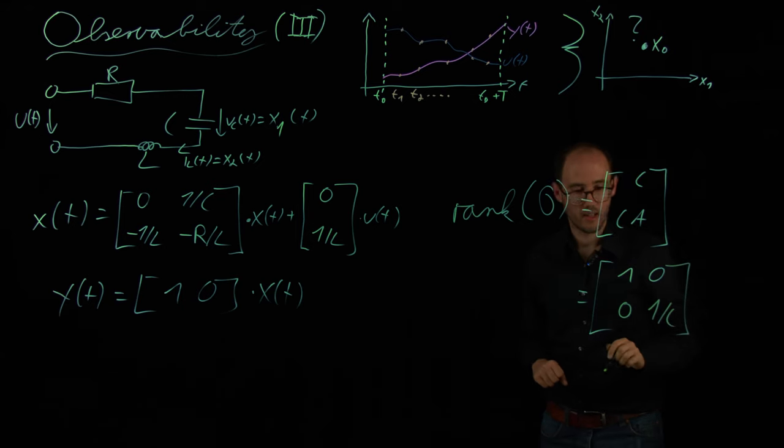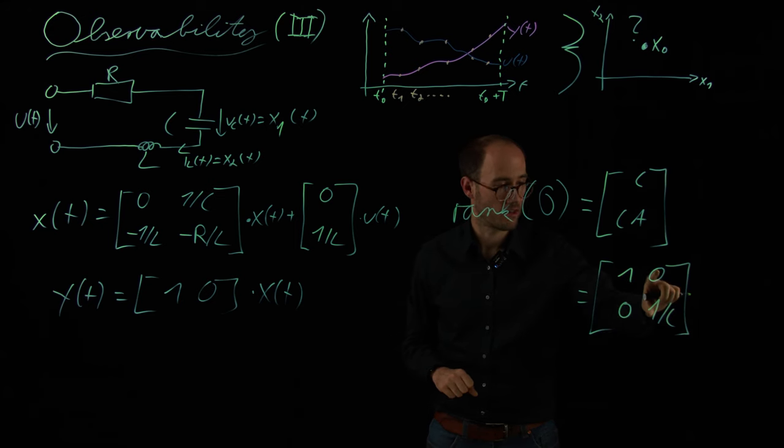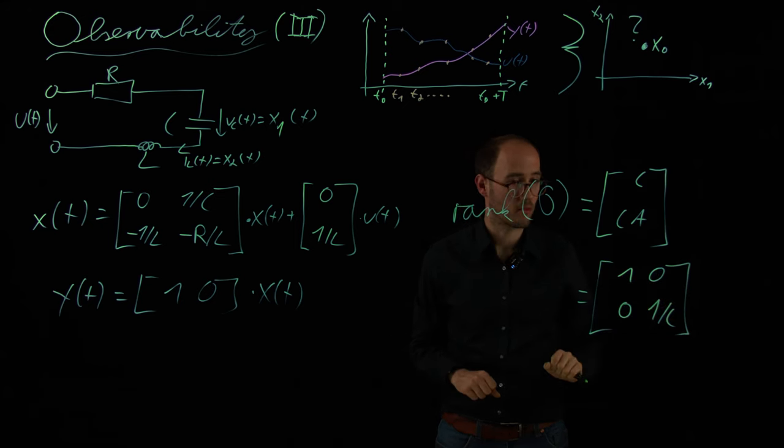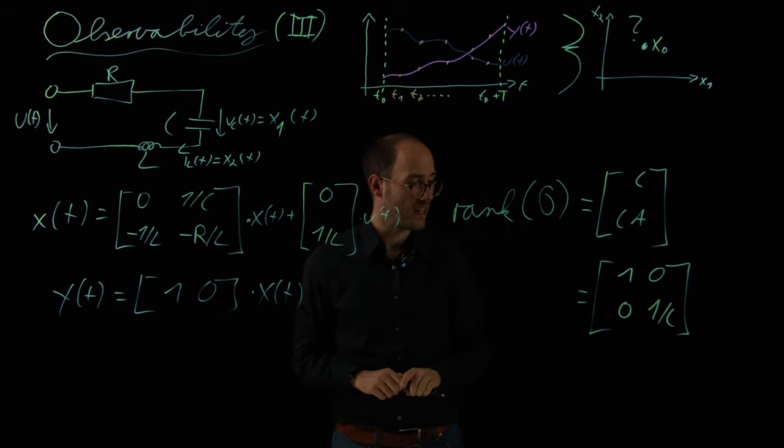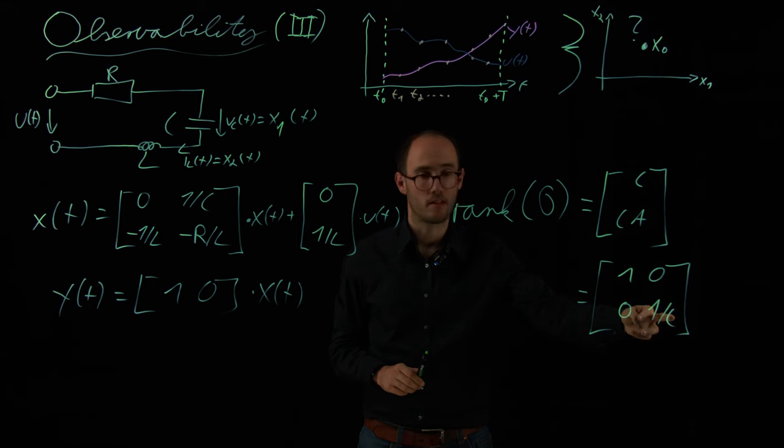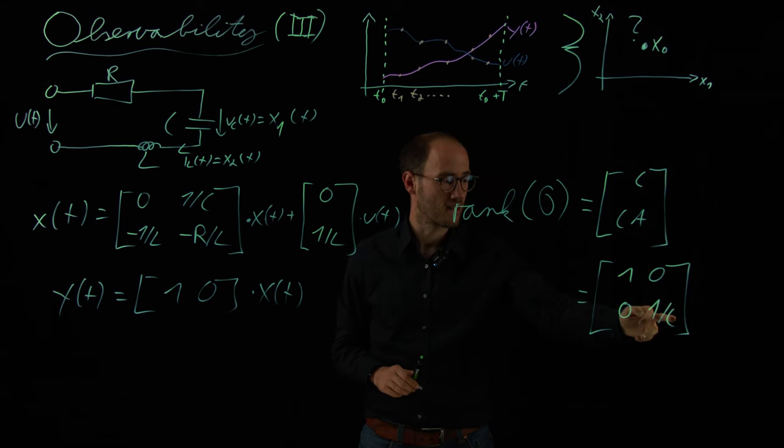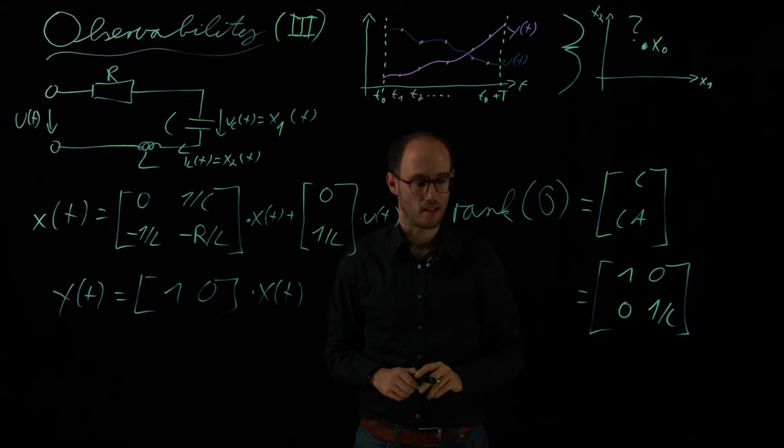If we have a look at this matrix, we of course see that this vector here, the one zero vector and the zero, one over C vector, they are definitely linearly independent from each other. And that is completely independent from the specific choice of this capacitance value here. As long as this capacitance is greater than zero and therefore well defined, these two vectors will be linearly independent.